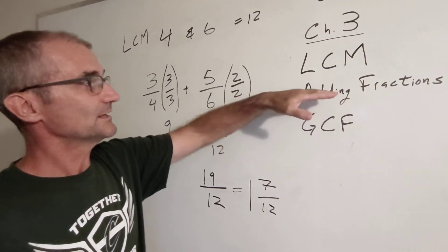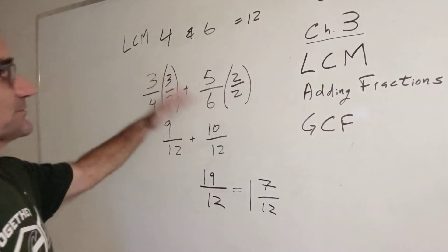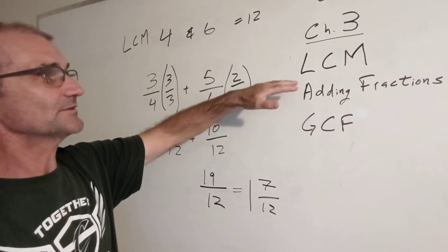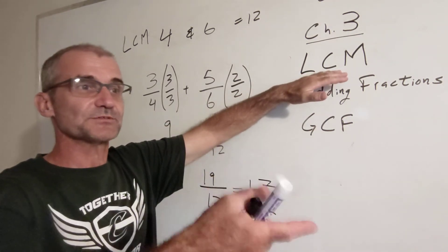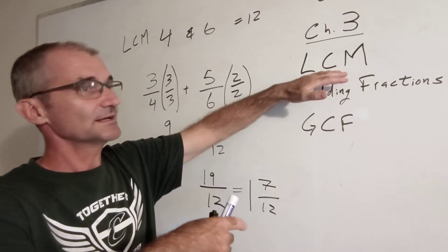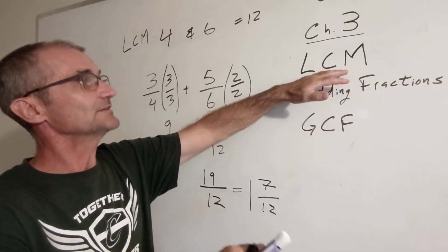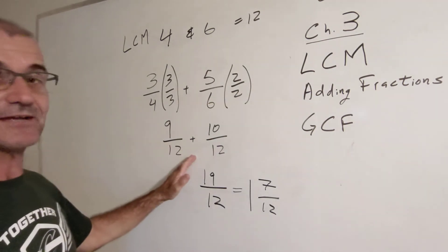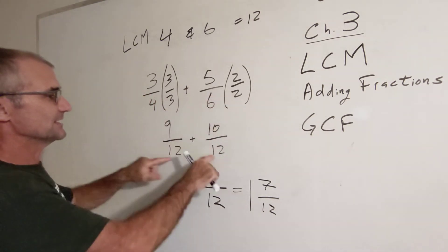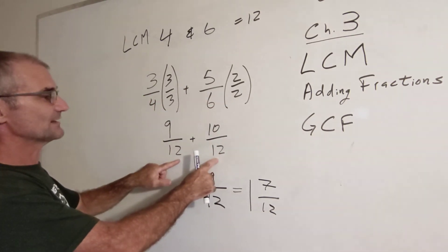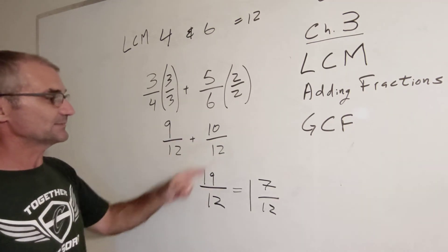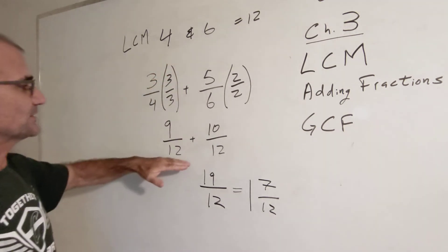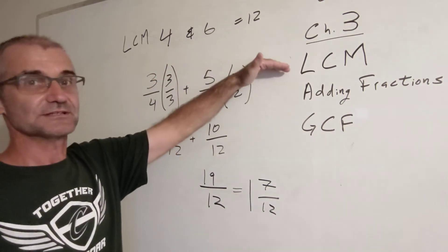So again, to find the least common multiple, you find all the multiples of a number — for 4, that would be 4, 8, 12, 16. You do that for the other number. You circle the multiples that are common — in this case, 12 and then 24. Then you look for the smallest common multiple, which is the least common multiple. To add fractions, you have to have a common denominator. Once you have that, you add across the top and keep the denominator. They're tied together because you find the common denominator using the least common multiple.